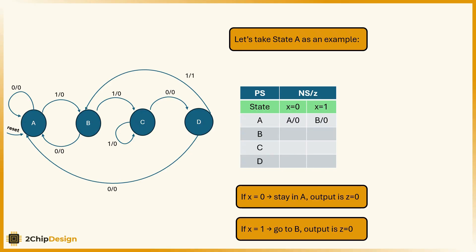Let's take state A as an example. If x equals 0, stay in A. Output is z equals 0. If x equals 1, go to B. Output is z equals 0.